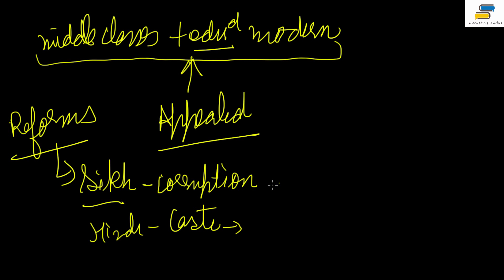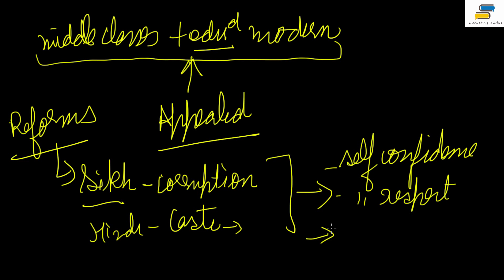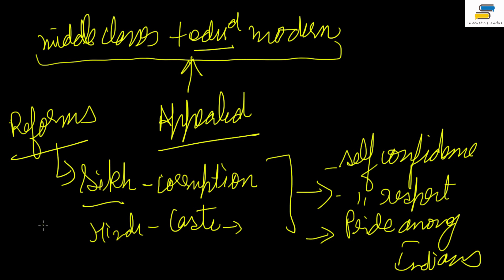Because of these reforms, there was self-confidence among people. When people feel equal because there is no caste system, they gain self-respect. People of the lower caste were treated very badly, and their self-respect had been lost. These reform movements brought back the pride among Indians. Reformers enabled their followers to bear the brunt of the British, and things became clearer for Indians regarding the positive aspects of their religion.